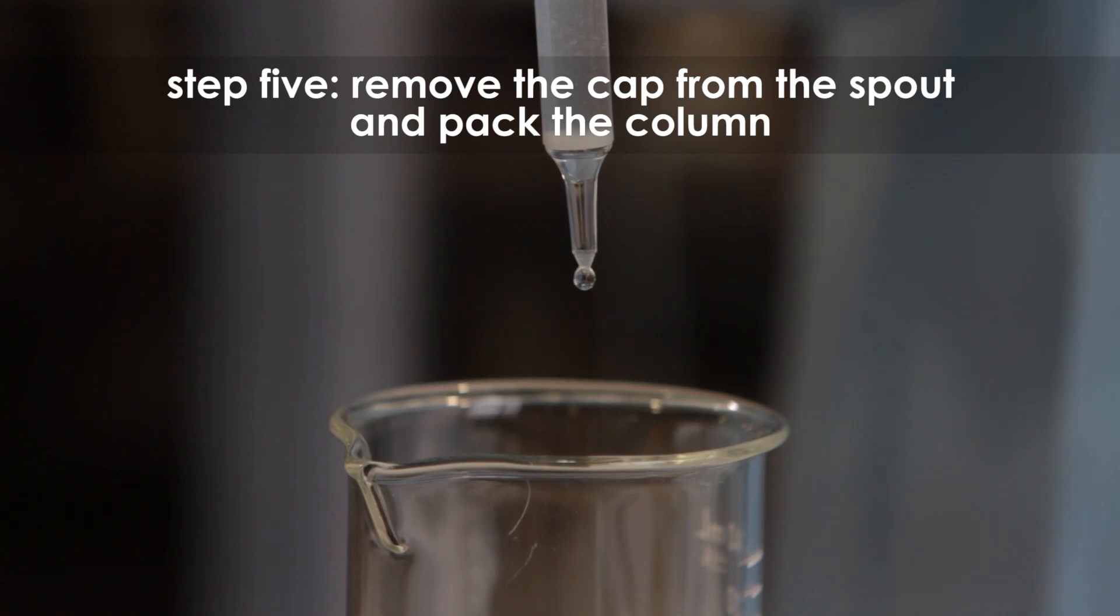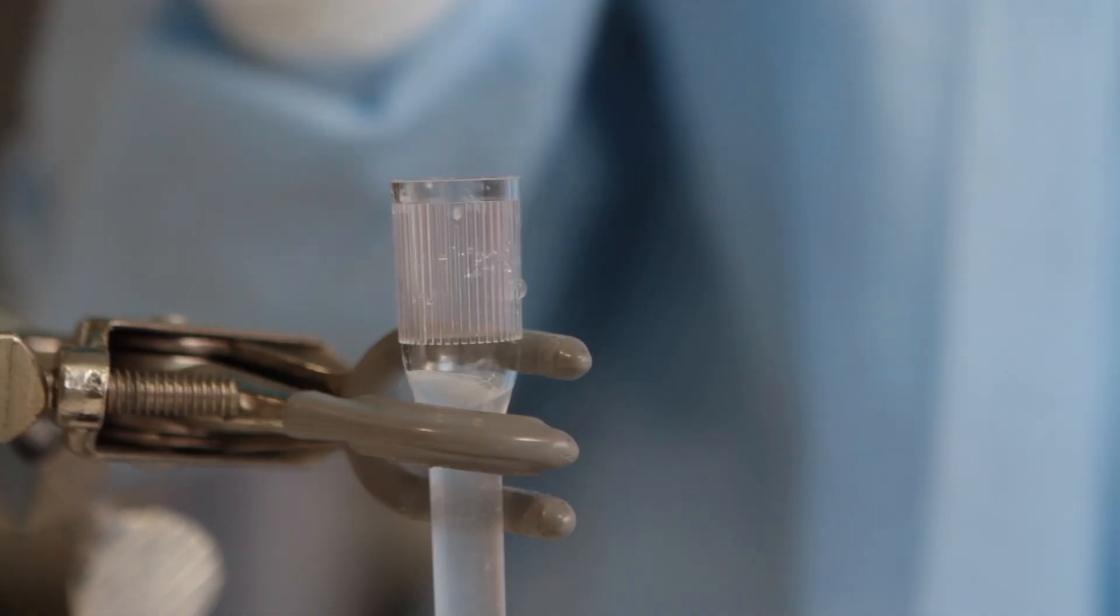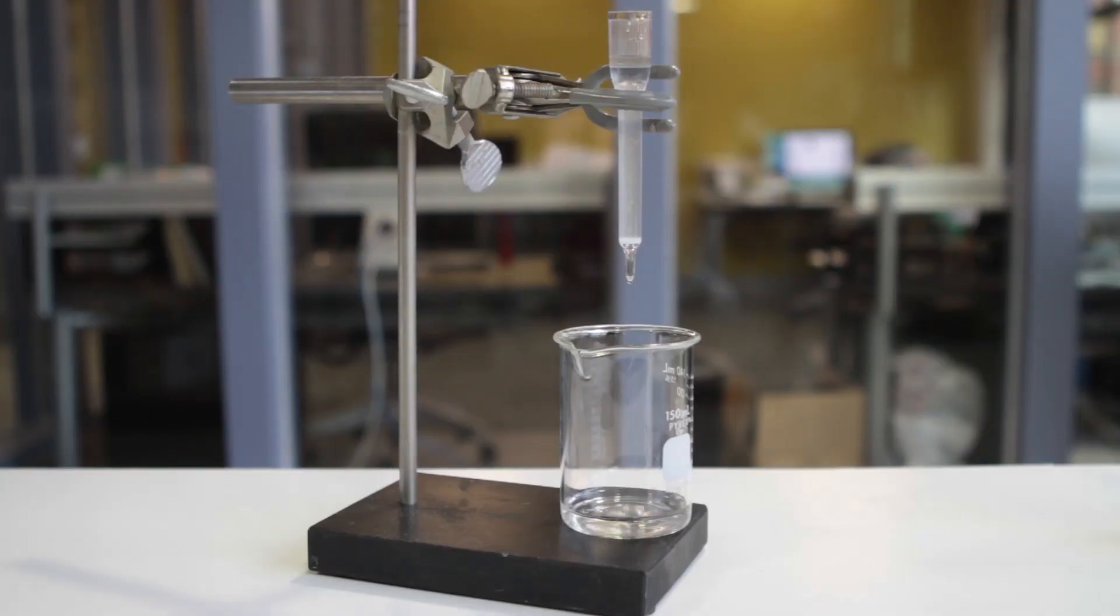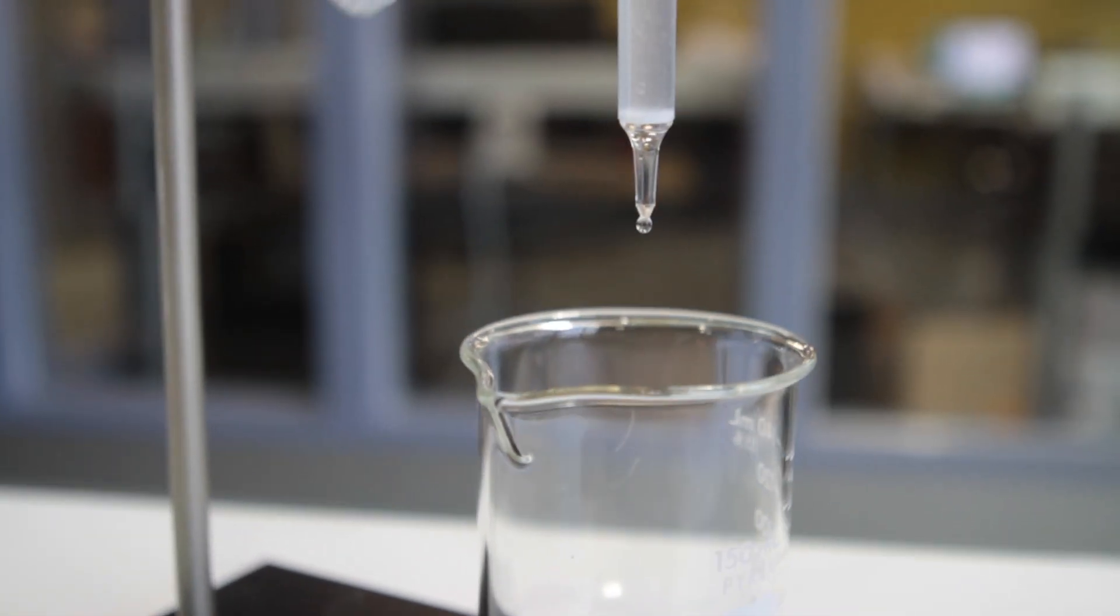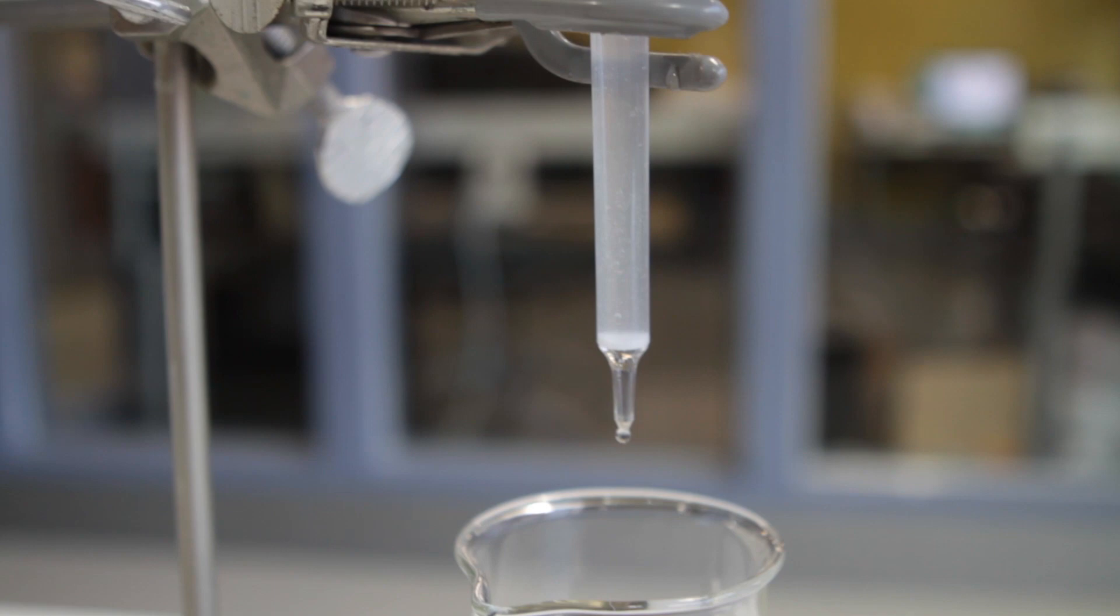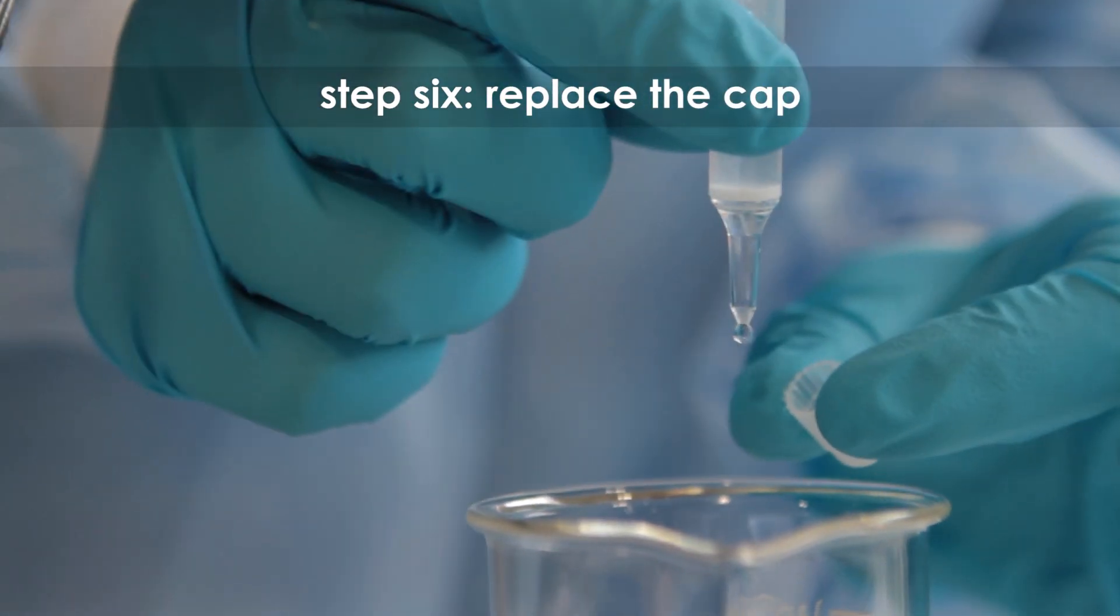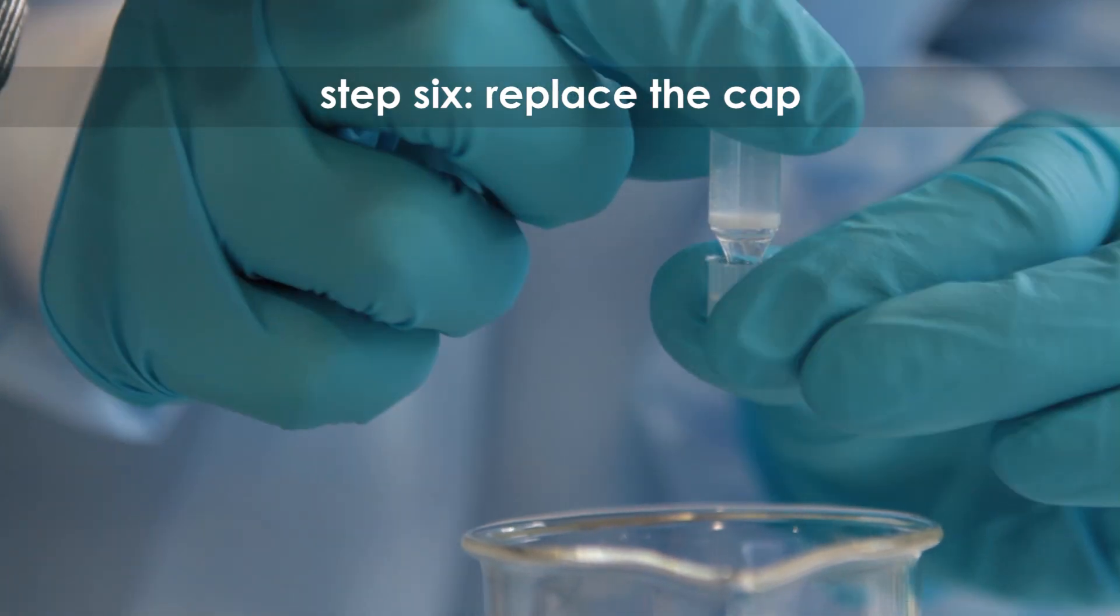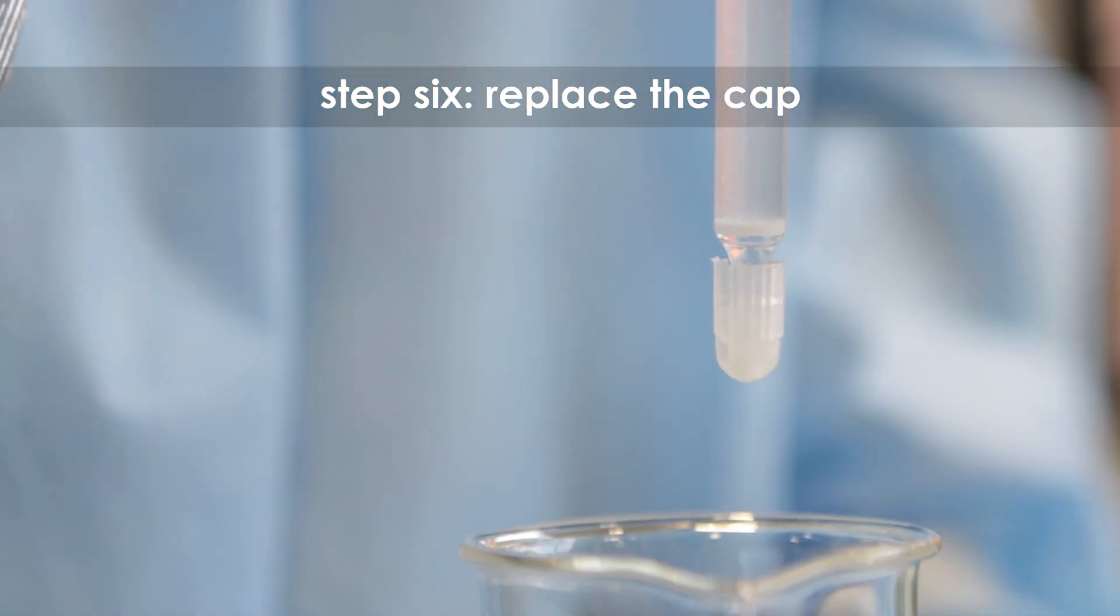Pack the column by allowing the buffer to flow through the column. Add buffer to the reservoir when necessary. The column is packed when the matrix stops compressing. Step 6: Replace the cap onto the spout of the column.